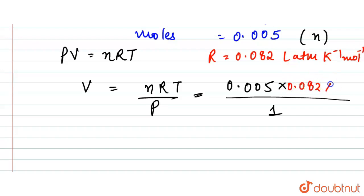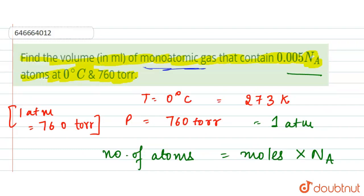So now here we have 0.082 into 273. So from here we get the volume is equal to 0.112 liters.